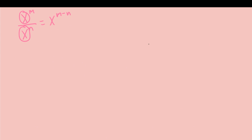We'll have another one over here: x to the m power times x to the n power — or x to the m power raised to the n power — is equal to x to the m times n power.